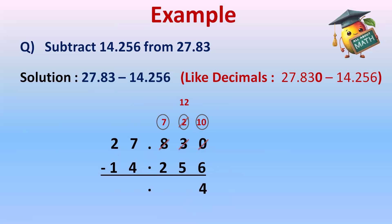Now 12 minus 5 is 7, and 7 minus 2 is 5. 7 minus 4 we have 3, and 2 minus 1 we have 1. So our answer is 13.574 after the subtraction.